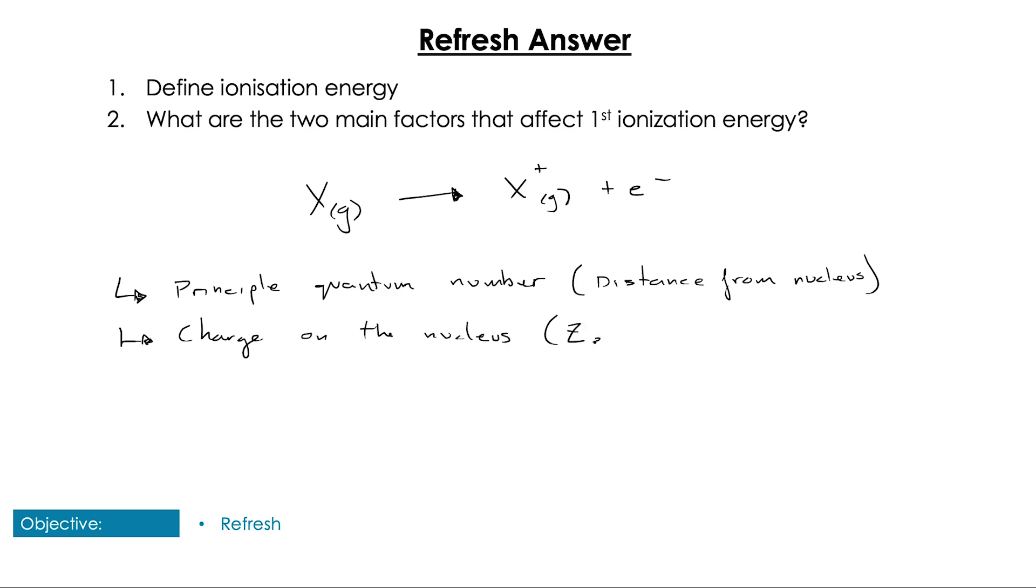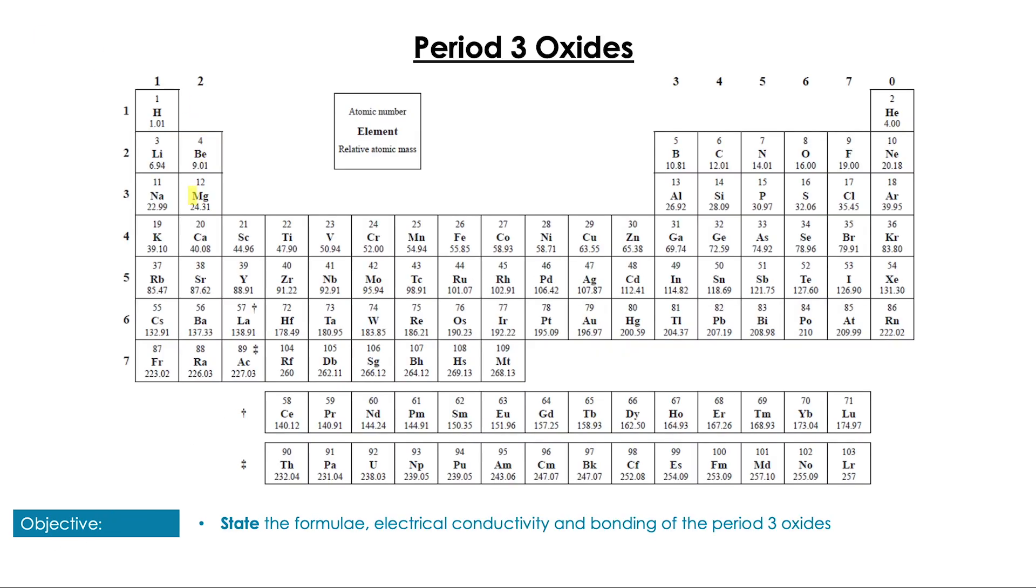Looking at this video, we are going to be looking at the Period 3 oxides. That is all the way across Period 3. However, we can effectively discount argon from the conversation here, as argon does not actually form oxides.